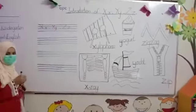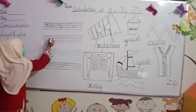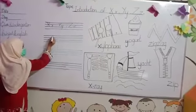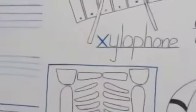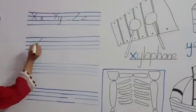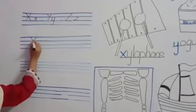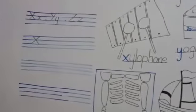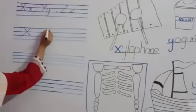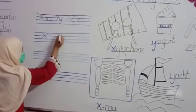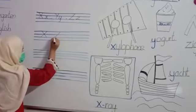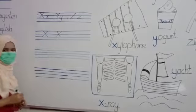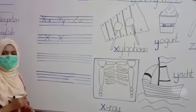First, how to write X. Make one slant line from line one to line three. Then make the opposite slant line. This is letter X.